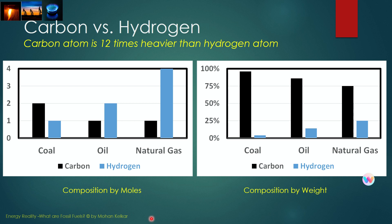If you look at the weight percentage of carbon versus hydrogen in coal, oil, and natural gas, you'll find that the difference is even more magnified because carbon has a much higher atomic weight than hydrogen — carbon has an atomic weight of 12 versus hydrogen's atomic weight of 1. So in coal, almost 96% by weight is carbon and only 4% is hydrogen. In oil, 86% is carbon and about 14% is hydrogen. And in natural gas, 75% of the weight is carbon and about 25% is hydrogen.